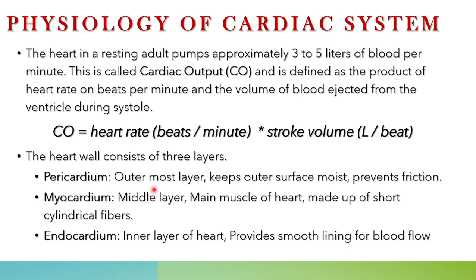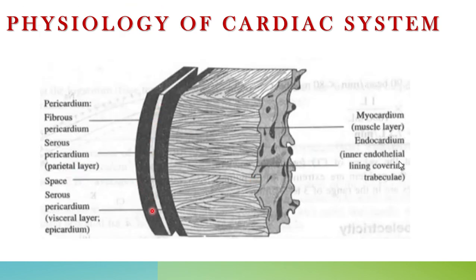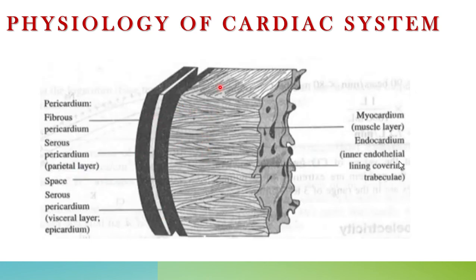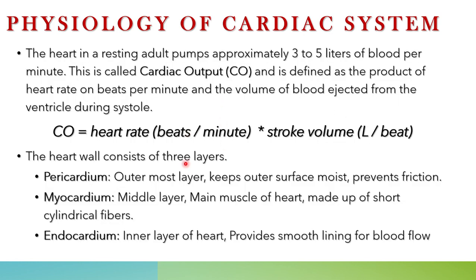The heart wall consists of three layers. The outermost layer is the pericardium, which keeps the outer surface moist and prevents friction. The middle layer is the myocardium, which is the main muscle of the heart made up of short cylindrical fibers. The innermost layer is the endocardium, which provides a smooth lining for blood flow.